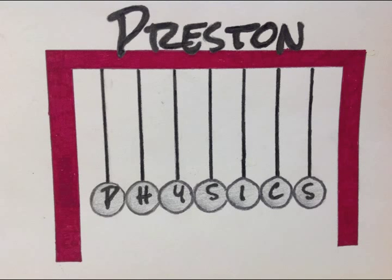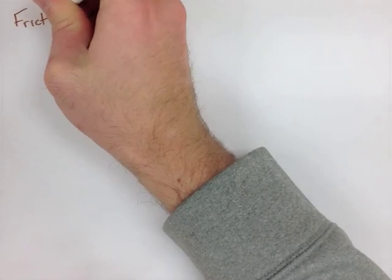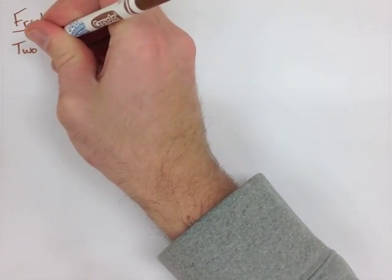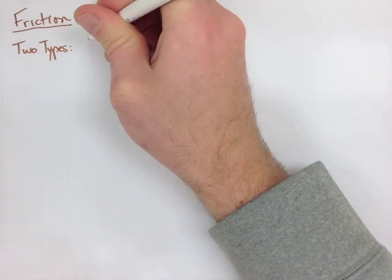Preston Physics, Grade 11, Forces Note 3, Friction, Static and Kinetic. When we're looking at friction, there's two different types of friction. The two types are static and kinetic.